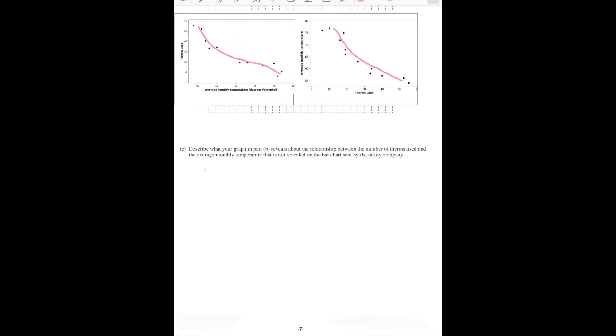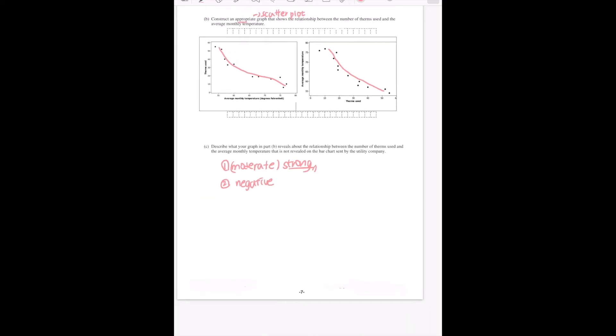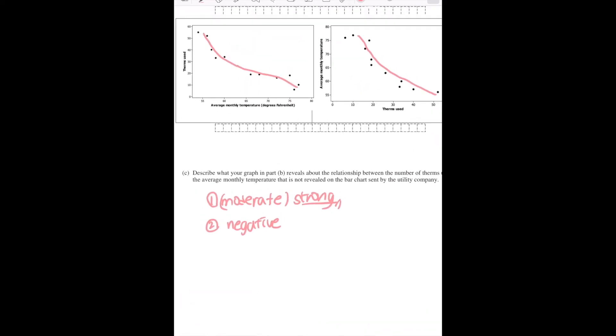So, you can say that it's, first of all, it shows a moderate, but I would actually say it's more of a strong relationship. And it shows a negative relationship, right? Because you say, or you can say that the number of therms decreases as the temperature increases, or vice versa.